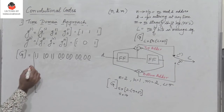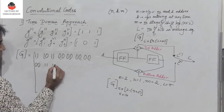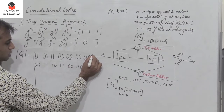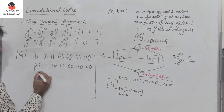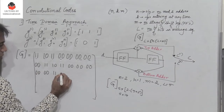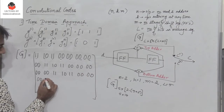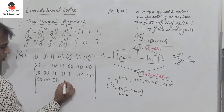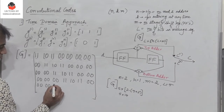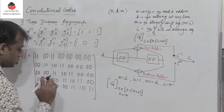For each subsequent row, we shift the pattern right by 2 positions (one pair of zeros prepended). Row 2: 0, 0, 1, 1, 1, 0, 1, 1, 0, 0, 0, 0, 0, 0. Row 3: 0, 0, 0, 0, 1, 1, 1, 0, 1, 1, 0, 0, 0, 0. Row 4: 0, 0, 0, 0, 0, 0, 1, 1, 1, 0, 1, 1, 0, 0. Row 5: 0, 0, 0, 0, 0, 0, 0, 0, 1, 1, 1, 0, 1, 1. This completes the 5×14 generator matrix.